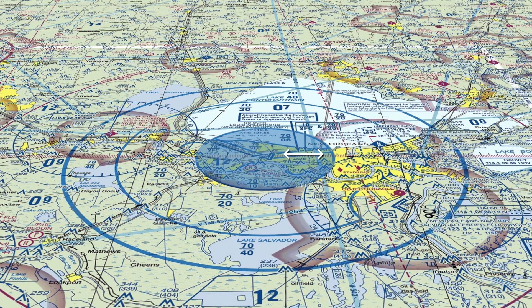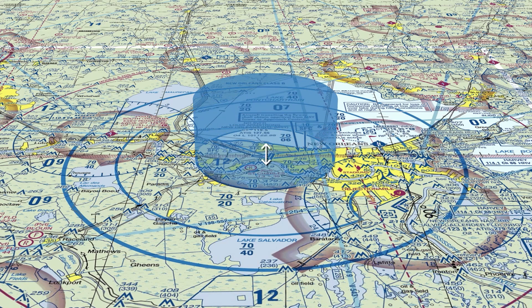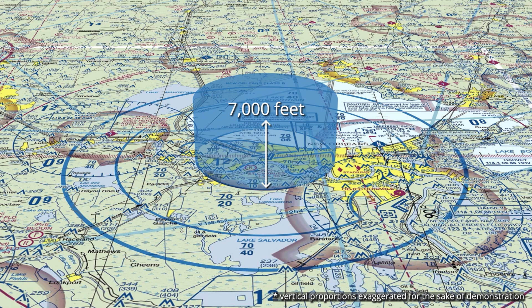The first ring extends approximately 8 miles in radius from the airport and, according to this chart, rises up to 7,000 feet above ground level, or AGL.